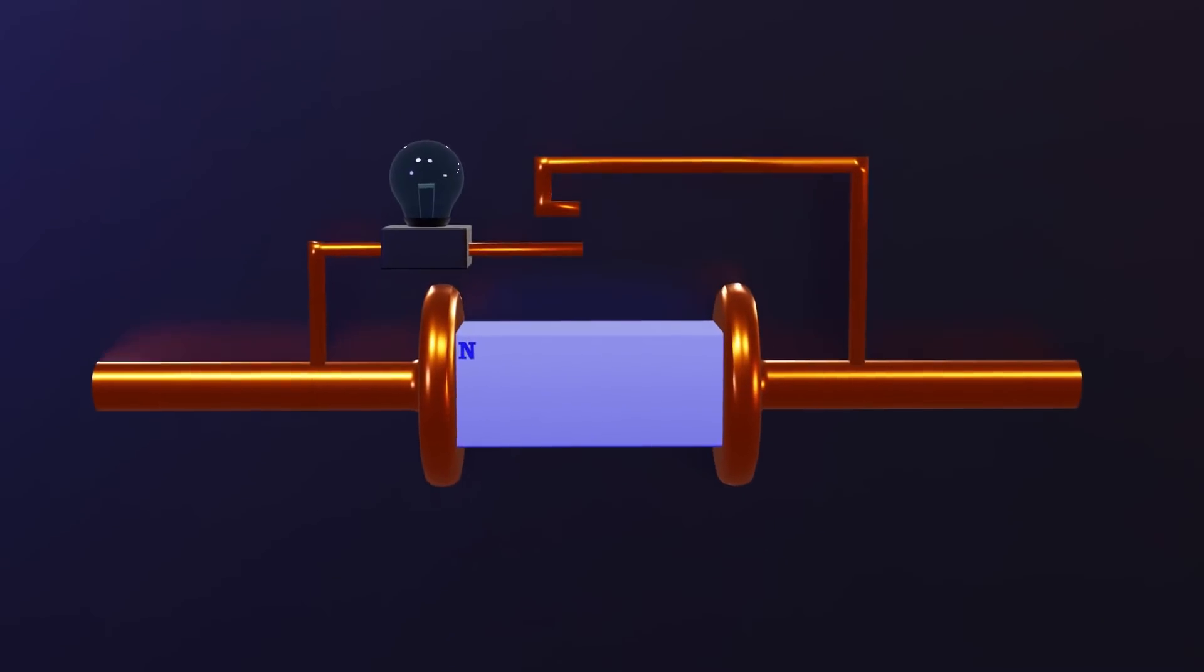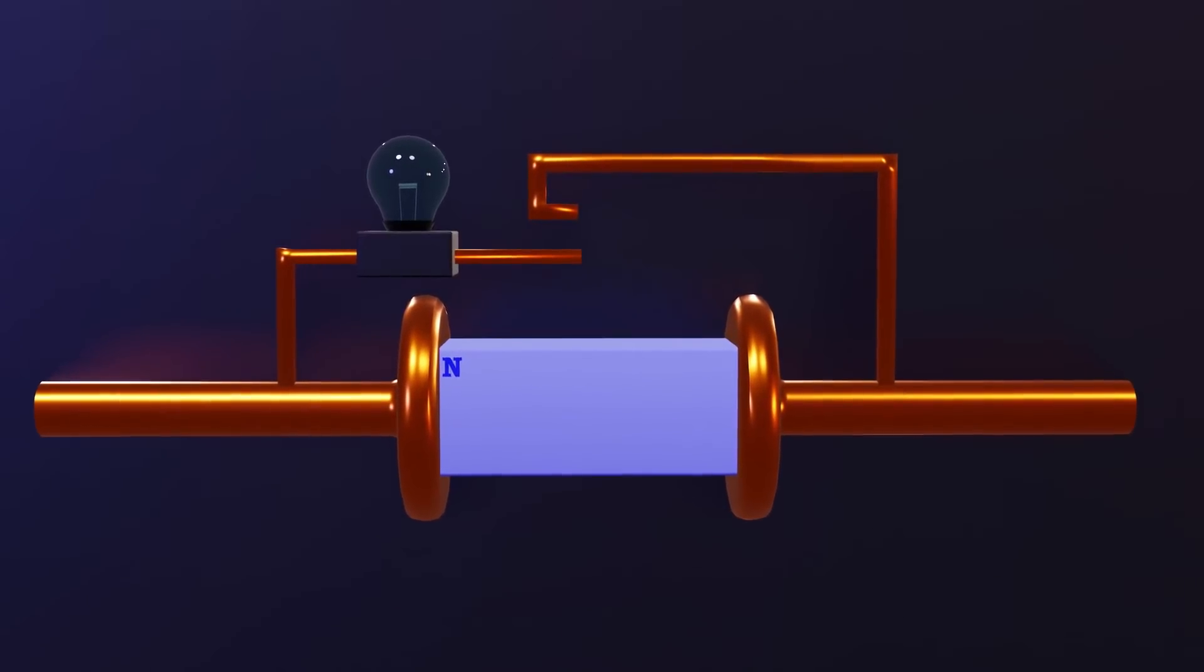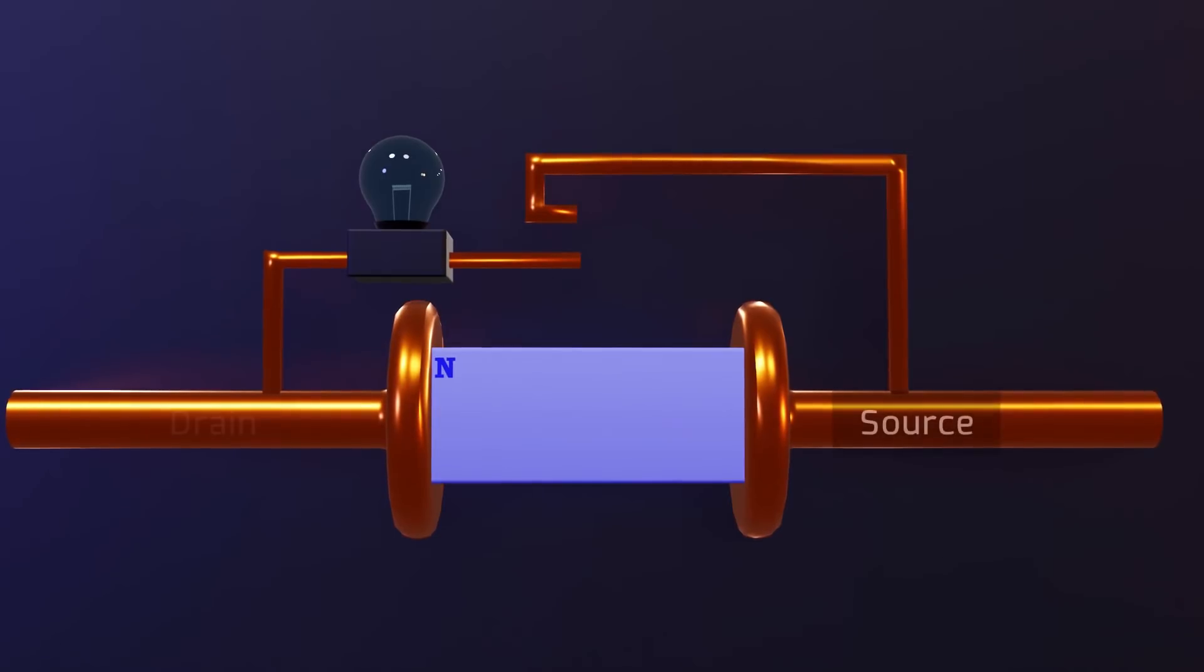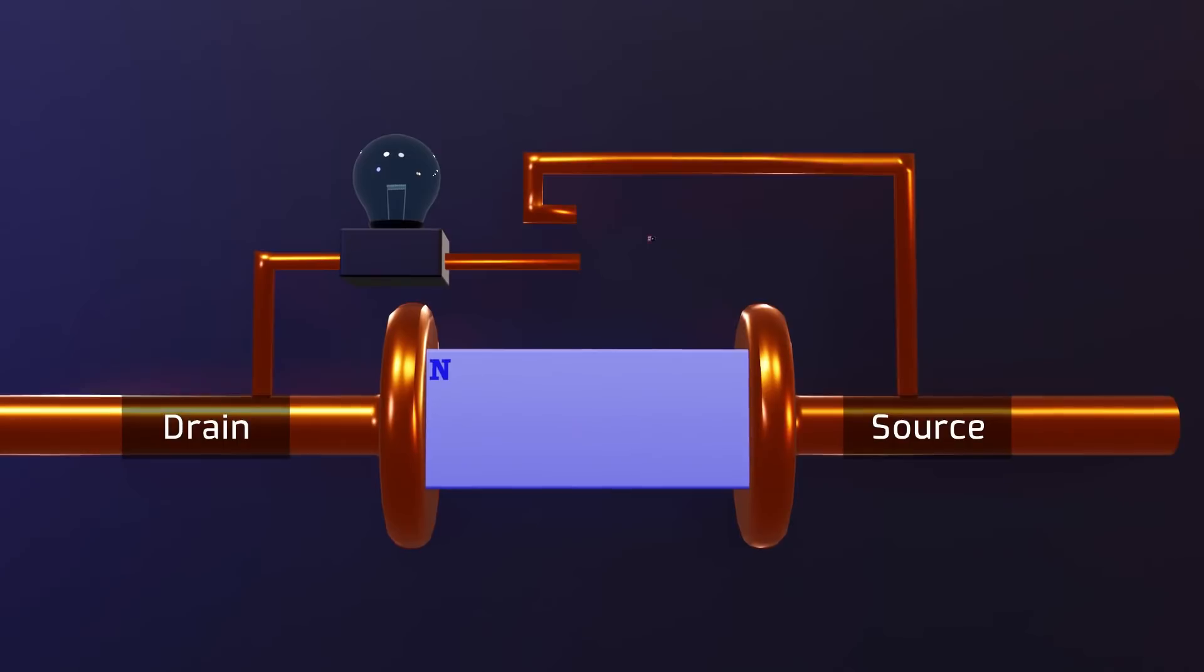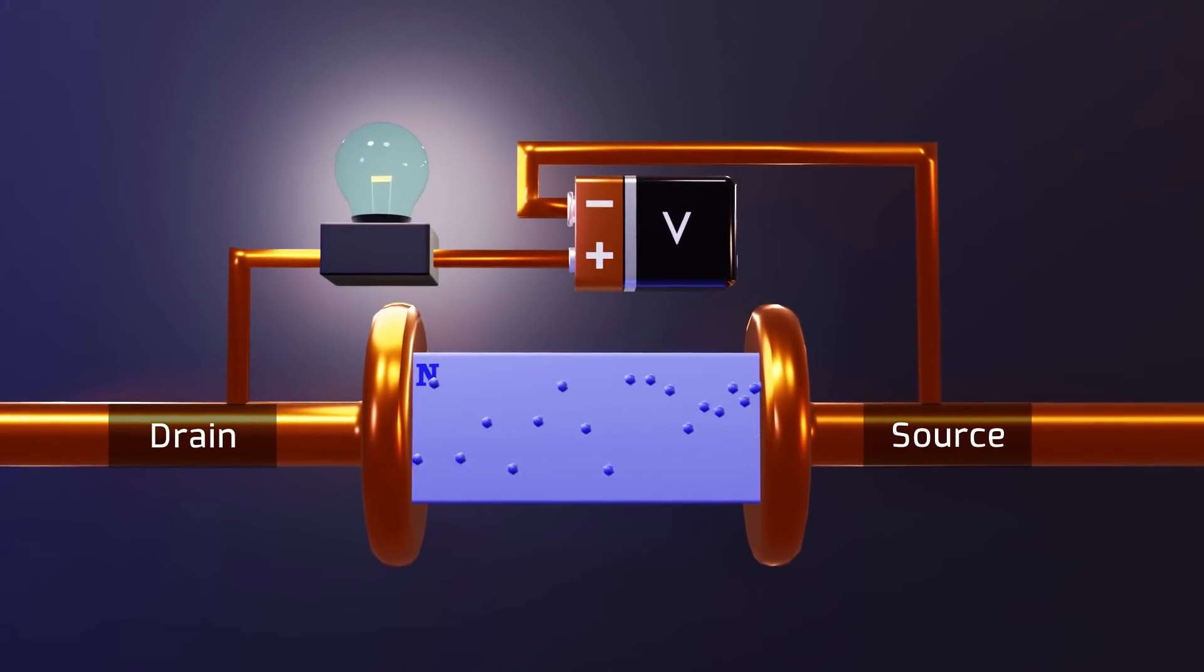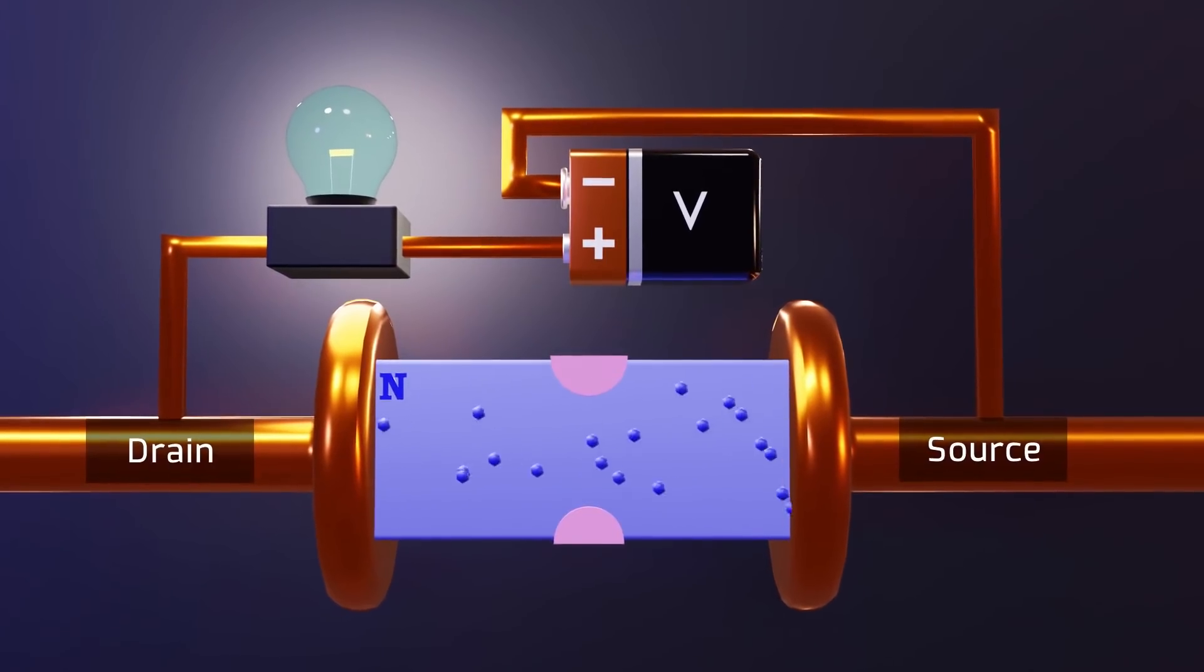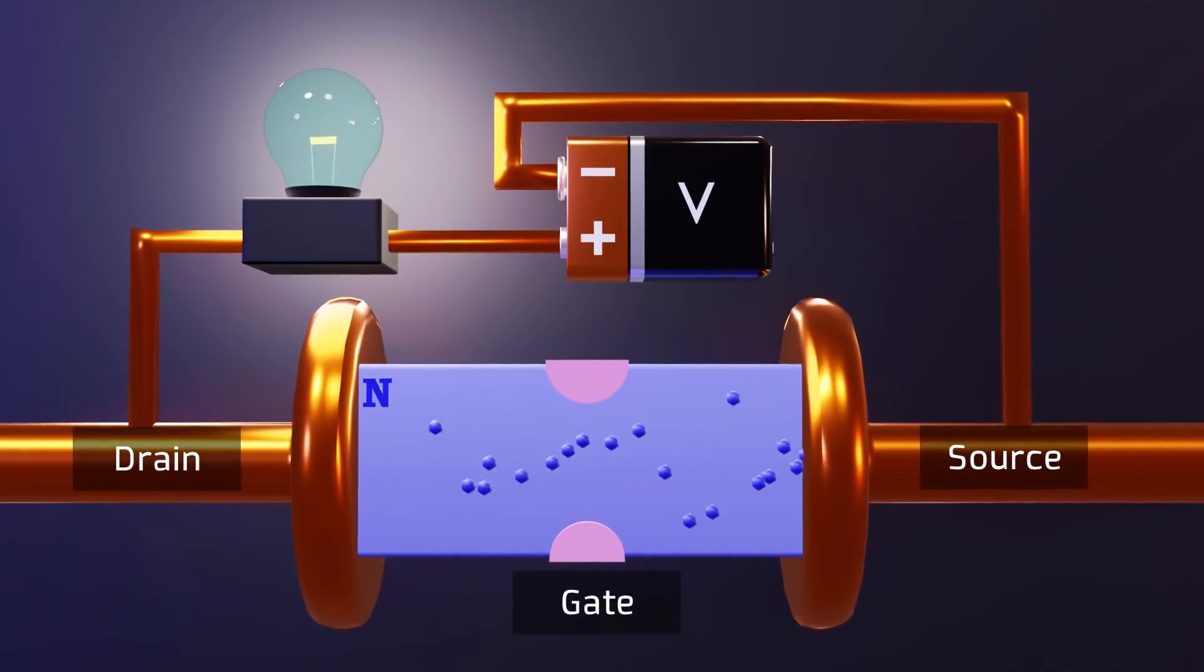This also works using semiconductors type N and type P, but they are arranged in a different way. In this case, there is a channel made of a single semiconductor between two terminals, which we will call source and drain. As I mentioned in the previous video, a doped semiconductor can transmit the current without problems. So far, all we have is a simple cable. But the interesting thing happens when we add a semiconductor of the opposite type in the middle of the canal. This new element is known as the gate.